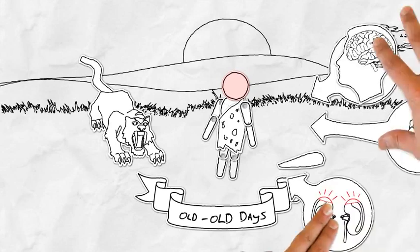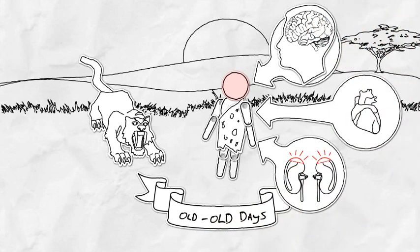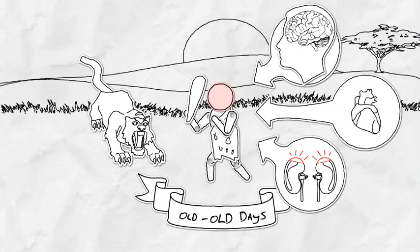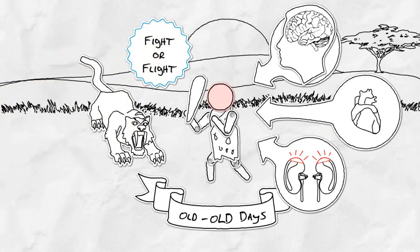Your body jolts you into action with stress hormones. Suddenly, because of them, you're alert, fast and strong, and able to either fight or run. By the way, that's called the fight-or-flight response.